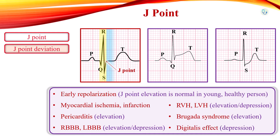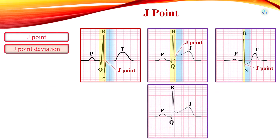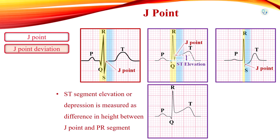On most EKGs, the determination of the J-point as a demarcation between QRS and the start of the ST segment is clear — it marks the transition of the QRS complex to the ST segment. The magnitude of ST-segment elevation or depression is measured as the difference in height between the J-point and the PR segment.